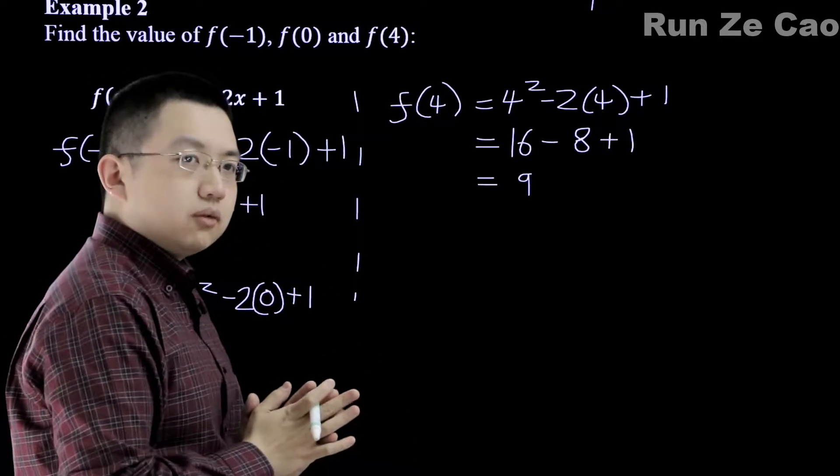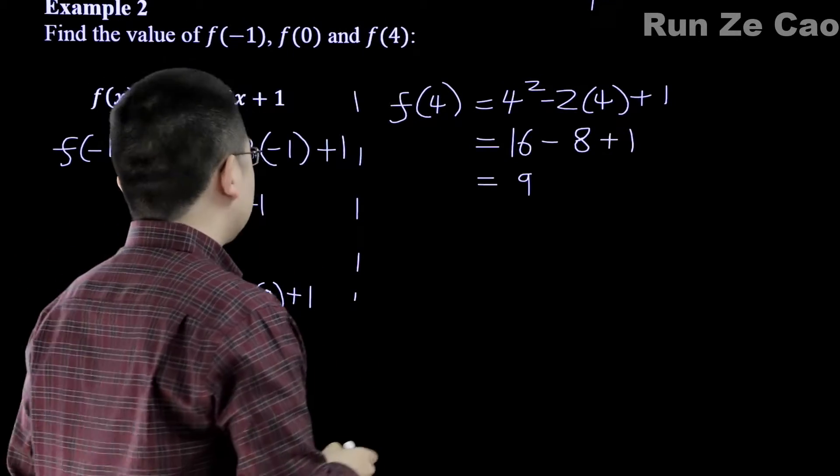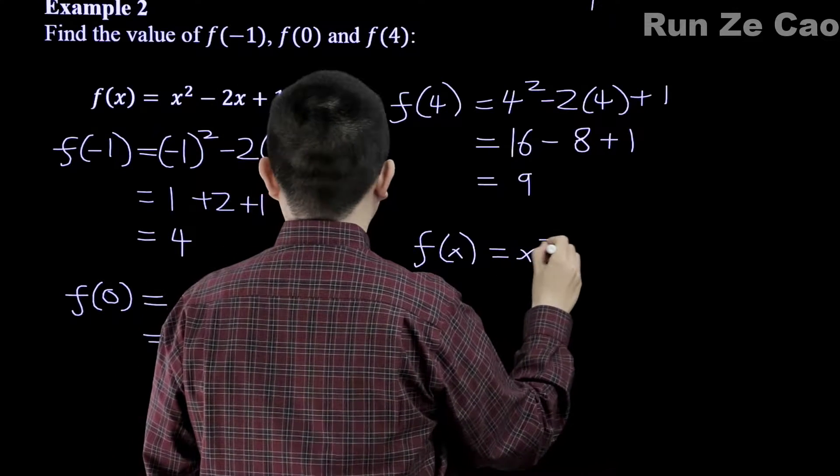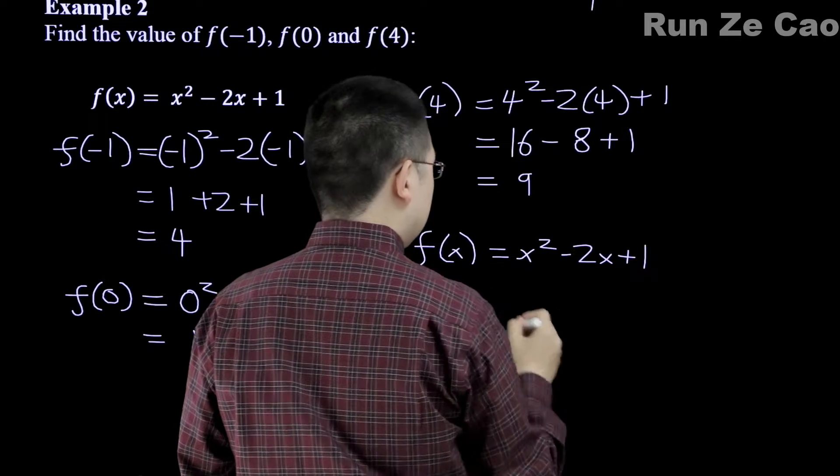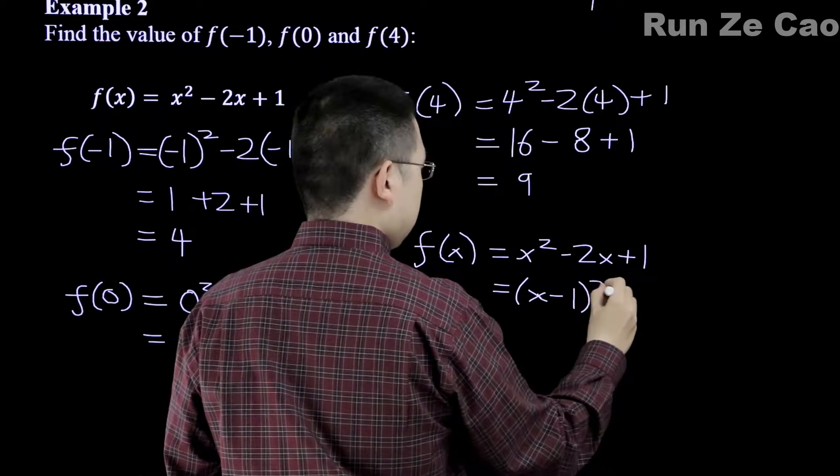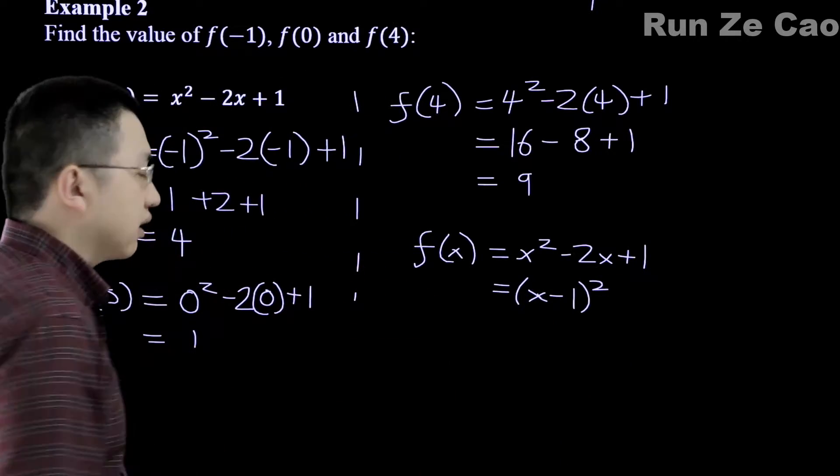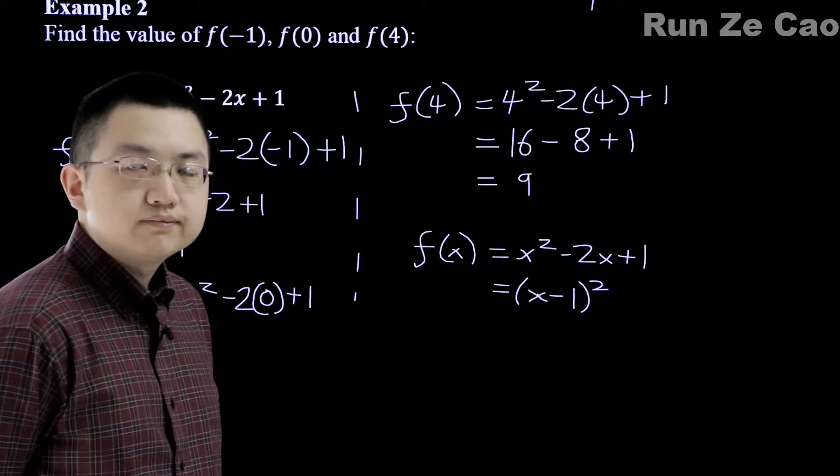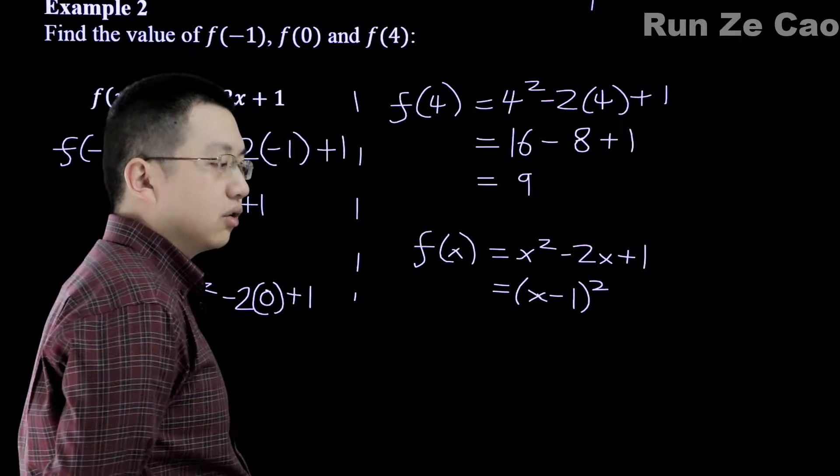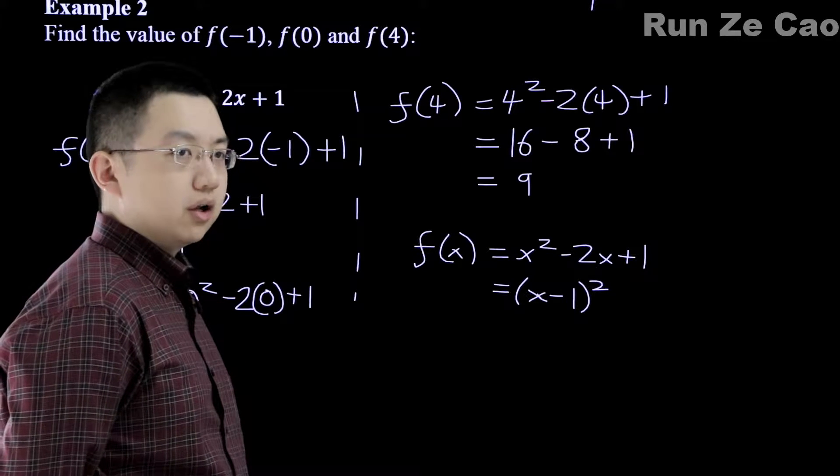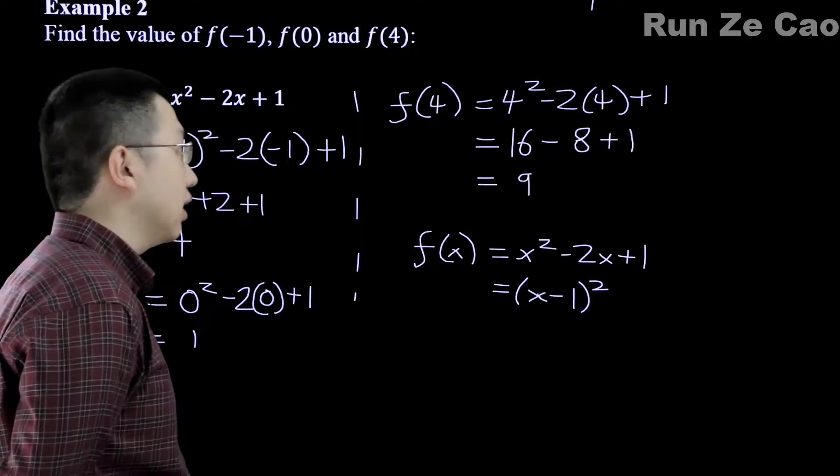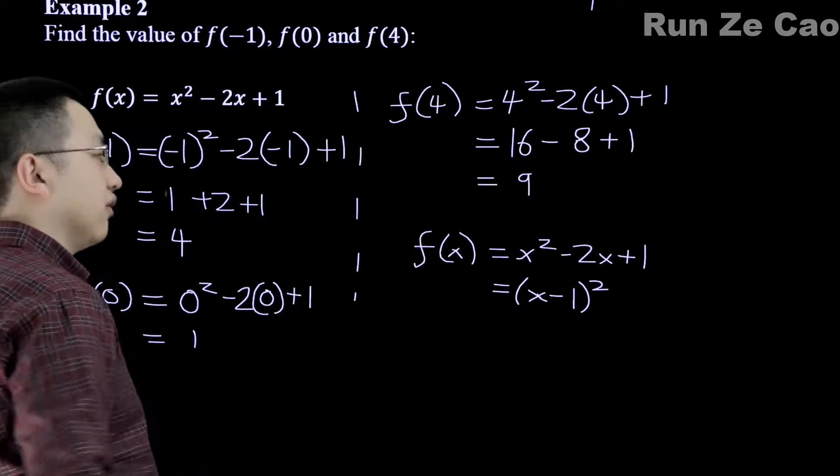Now, we could have done this a different way, because look at this f(x) equals x squared minus 2x plus 1. So this is equal to (x - 1) squared. So we could have done it like this instead if we felt like it. But we decided not to because we would have had to substitute, subtract, then take exponent anyway.